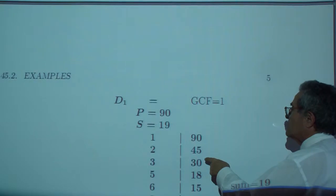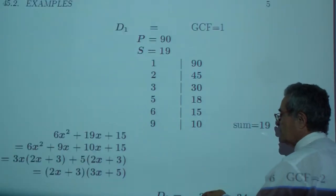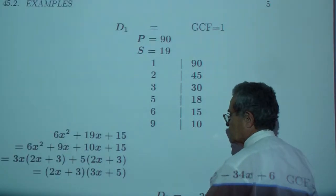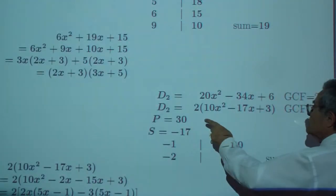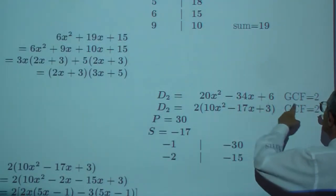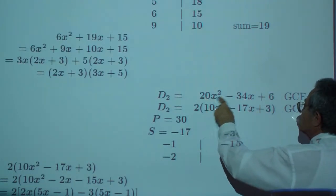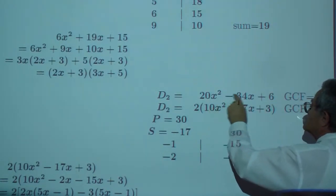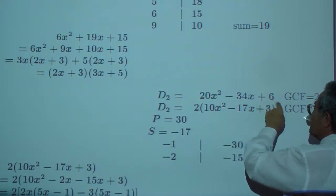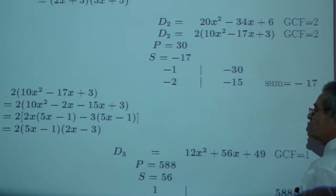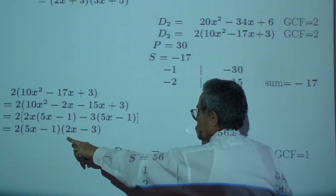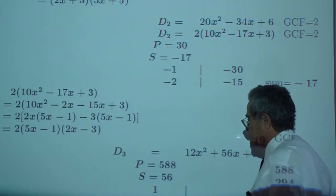And D sub 1, greatest common factor 1, magic numbers 9 and 3, 2x plus 3, 3x plus 5. Second denominator, GCF is 2. 2 goes here and here. Greatest common factor, just 2. Product sum for this trinomial, you get 2 times 5x minus 1, 2x minus 3.